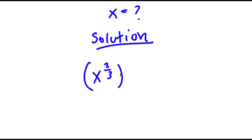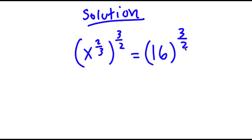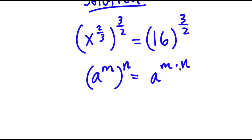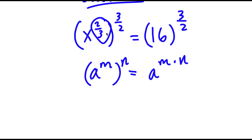I'm going to take the power of 3 over 2 on both sides. The reason I did this is because if I have something in the form a to the power of m to the power of n, this is equal to a to the power of m times n. We want to find a value that when multiplied by 2 over 3 is equal to 1, because we just want x, which is x to the power of 1. So we want to make this 2 over 3 into a 1, and to do that we need to multiply it with another number to make 1. That's why I multiplied with 3 over 2 — 2 over 3 and 3 over 2 are reciprocals, so they make 1.